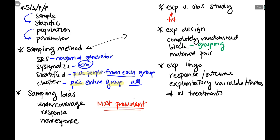From our graphs: I won't make you construct a histogram, but you need to know how to read one — find percentages, like what percent of people spent more than a given amount. You also need to discuss the shape of a histogram, which covers modes, symmetry, and unusual observations. A lot of you missed points on this in homework two by not identifying all three pieces of shape.